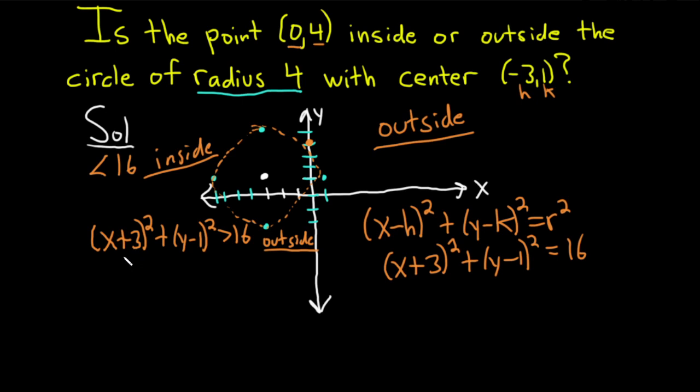So let's go ahead and do it that way. So x is 0, so it'll be (0 + 3)² plus, and then y is 4, so (4 - 1)². This is going to be 9 plus 9.